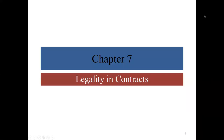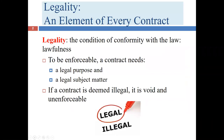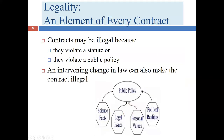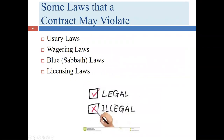Welcome to our second lecture covering Chapter 7, entitled Legality in Contracts. We started the chapter talking about what legality is and the fact that every contract needs a legal purpose and legal subject matter. Contracts can violate a statute or public policy, and generally contracts that do either are going to be void or voidable.